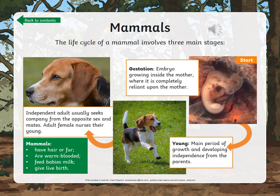The life cycle of a mammal involves three main stages. The first one is gestation — that's another word for pregnancy, or the time that a baby or offspring is growing inside the mother. So a beagle, for example, starts as an embryo which grows inside the mother dog, and it is completely reliant upon the mother for all of its nutrients to help it grow. Then it becomes a young dog, or a puppy, which is when it has its main period of growth and develops its independence from its parents. And then finally, it grows into an adult dog, which would usually mate with a member of the opposite sex, and adult females nurse their young.